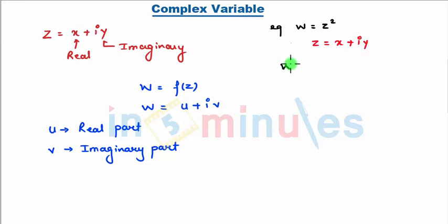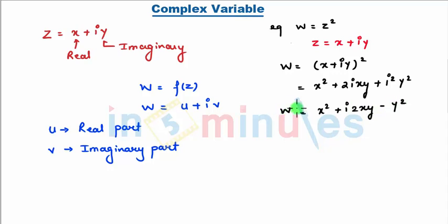So, I get w is equal to x plus iy, the whole square, which I get as x square plus 2ixy plus i square y square, which I finally get as x square plus i times 2xy minus y square, that's my w.